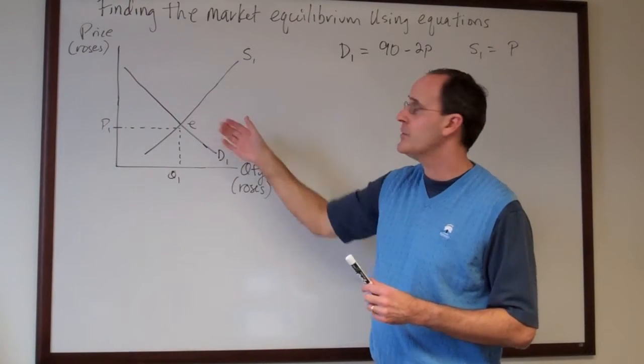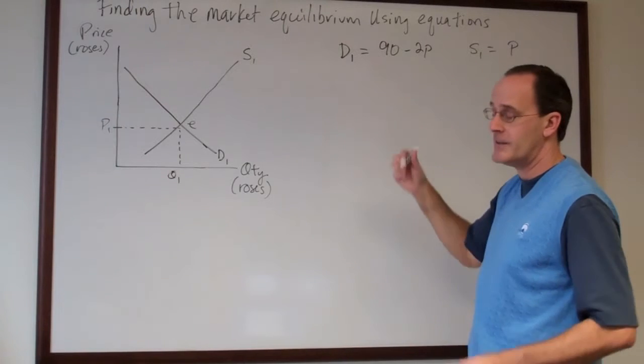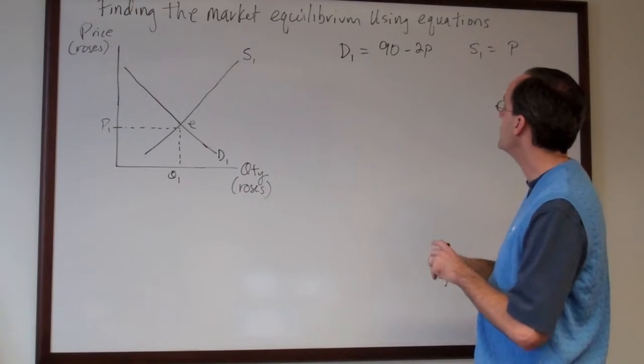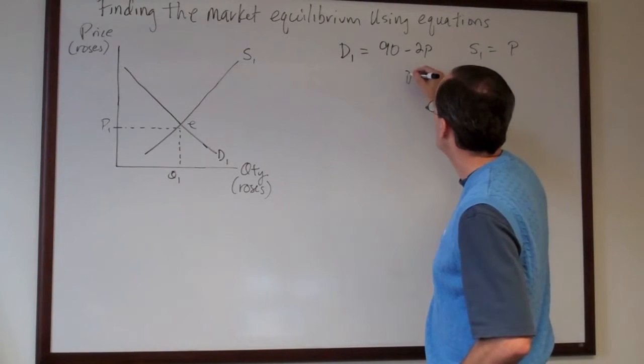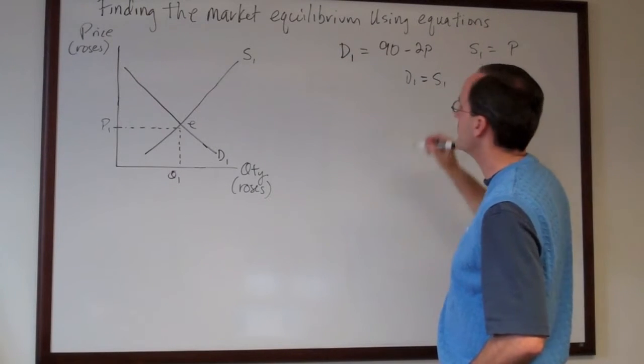If we'd like to solve for the equilibrium value what we need to do is set these two equations equal. So to find the equilibrium point D1 should be set equal to S1.